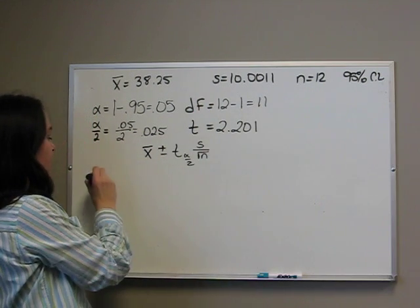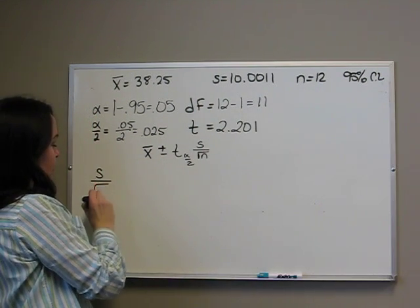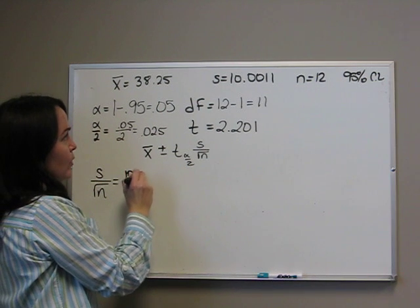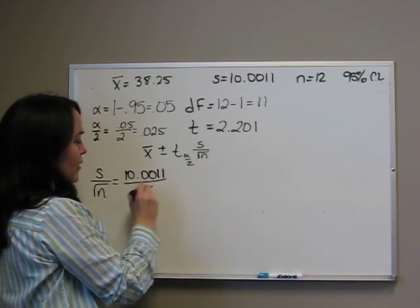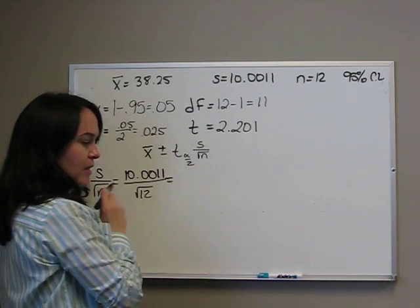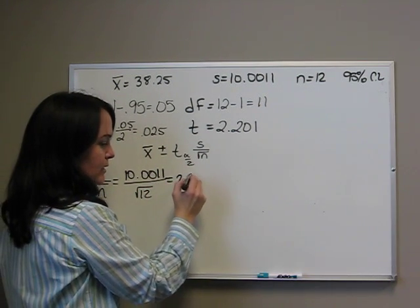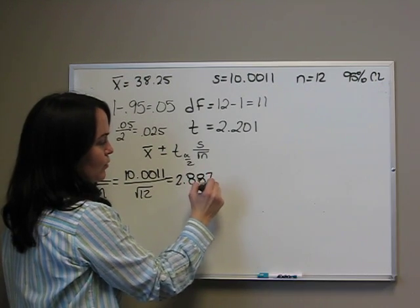So we take our s and divide by the square root of n. So 10.0011 divided by the square root of 12 gives us 2.8871.